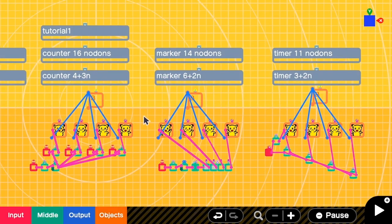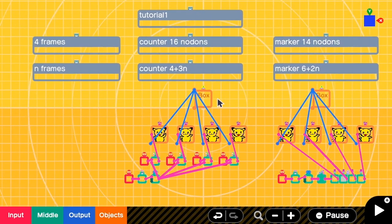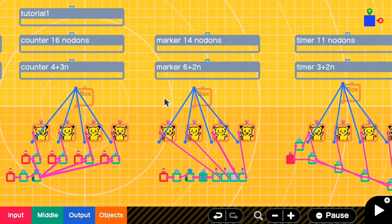Previously in my first tutorial, I introduced the counter method which uses 16 nodons for full-frame animation. Then I tried to improve my code by using the marker nodon. This time it can reduce to be 14 nodons.